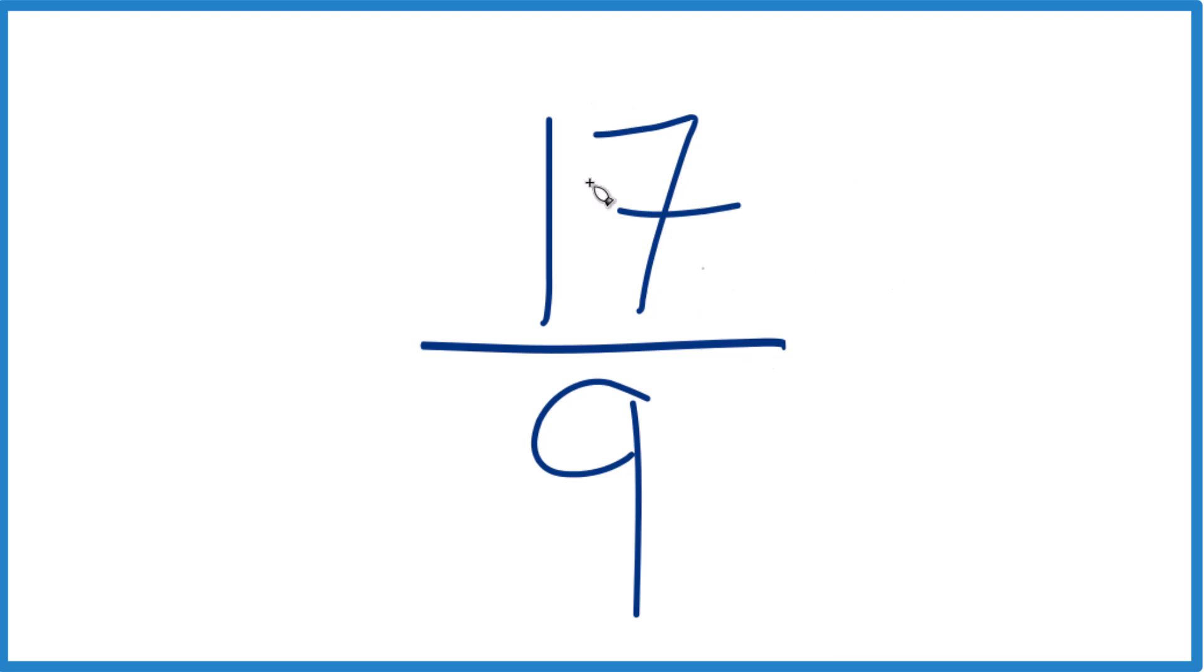a whole number that goes evenly into 17 and 9. The thing is, the only whole number that's going to go into both 17 and 9, that common factor is 1.